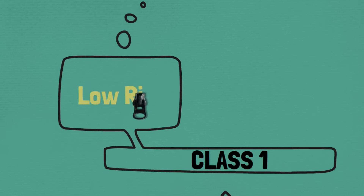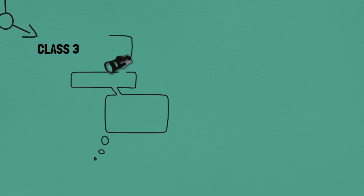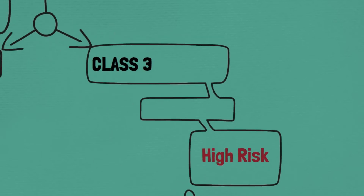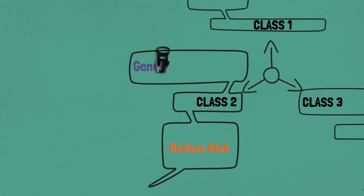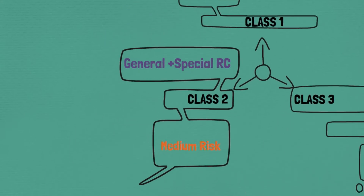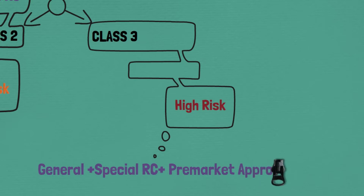According to the FDA classification, Class 1 devices are low risk devices, Class 2 devices are medium risk devices, and Class 3 devices are high risk devices. Class 1 devices require general regulatory control, Class 2 devices require general plus special regulatory control, and Class 3 devices require general plus special regulatory control and pre-market approval. Special regulatory control includes special labeling requirements, mandatory performance standards, and post-market surveillance. Pre-market approval is the FDA process of scientific and regulatory review to evaluate the safety and effectiveness of Class 3 devices.